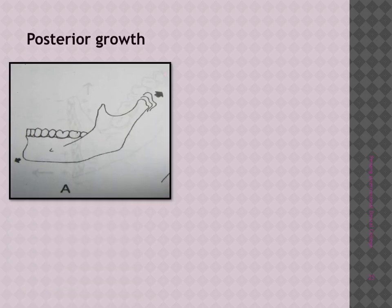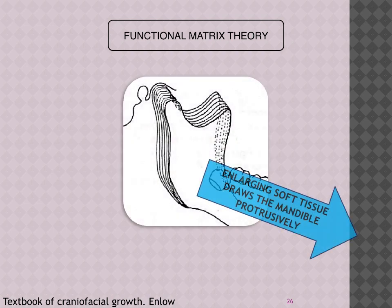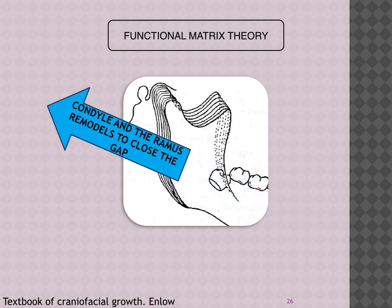There are two proposed mechanisms for condylar and mandibular growth. First, the condylar cartilage may actively push against the cranial base, driving the mandible down and forward. Second, according to functional matrix theory, the growing soft tissue drags the mandible forward, and bone deposition fills the gap created between the temporal bone and condyle. We more or less accept the second mechanism — the enlarging soft tissue drags the mandible protrusively, and the condyle and ramus remodel to close the gap.